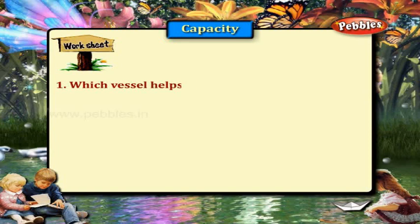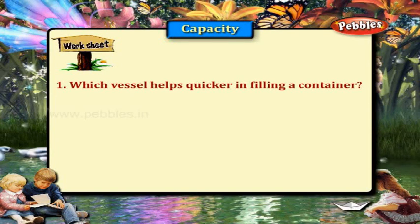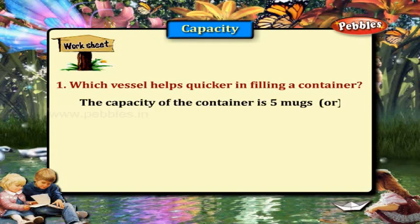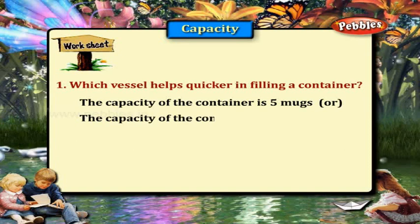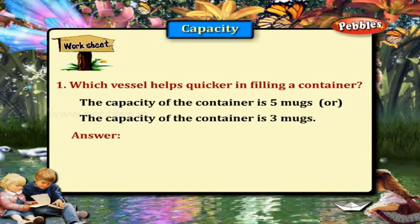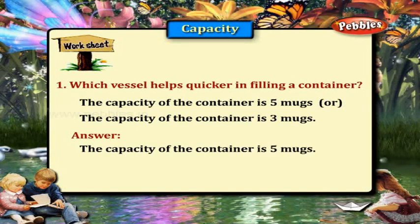Which vessel helps quicker in filling a container? The capacity of the container is five mugs, or the capacity of the container is three mugs. Answer: the capacity of the container is five mugs.